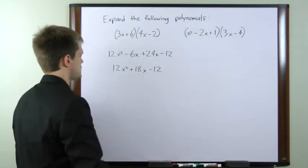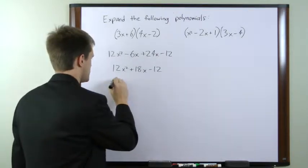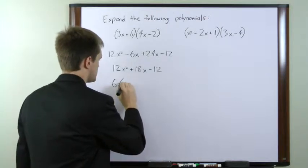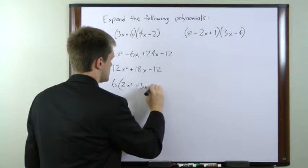Now each of these numbers is a multiple of 6, so we can pull a 6 outside of this expression. And that gives us 2x squared plus 3x minus 2.